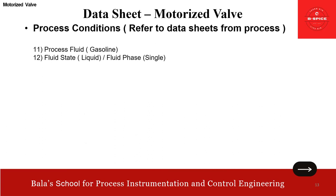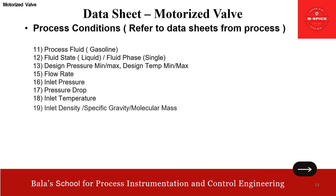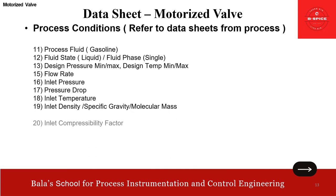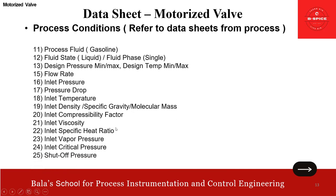Then process conditions — as we all know, this has to come from our process colleagues. In this case I'm going to cover what process data is needed. First, we need process fluid — example, gasoline. Fluid state is liquid, fluid phase is single phase or dual phase. Then design pressure minimum/max, design temperature minimum/max, flow rate, inlet pressure, pressure drop, inlet temperature, inlet density, specific gravity, molecular mass, inlet compressibility factor, inlet viscosity, inlet specific heat ratio, inlet vapor pressure, inlet critical pressure, and shutoff pressure. These are the things we need to get from our process colleagues.